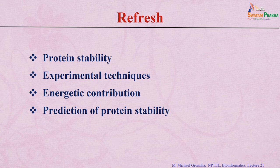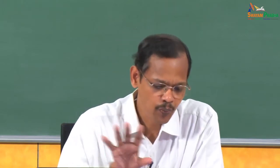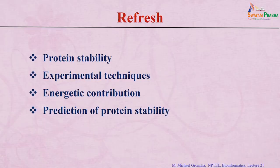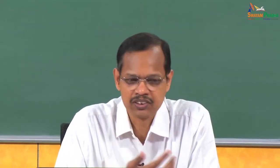In the previous lecture we discussed about protein stability. What is protein stability? It is the free energy difference between folded and unfolded states. The value of this free energy change is marginal — about 5 to 20 kilocalories per mole. There are various experimental techniques which can provide data on stability, for example thermal denaturation, circular dichroism, fluorescence spectroscopy, and differential scanning calorimetry.